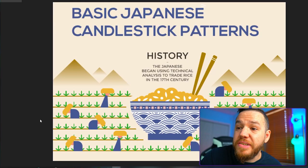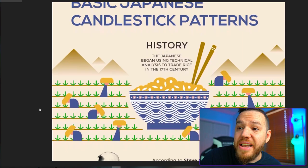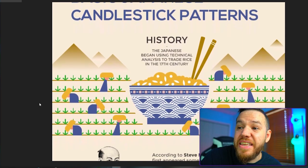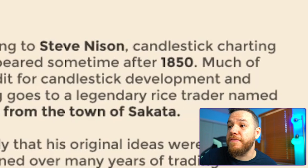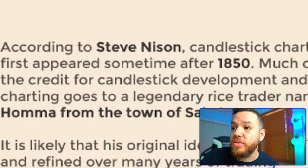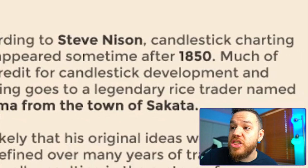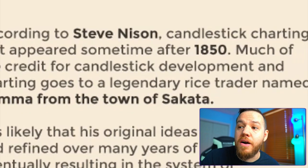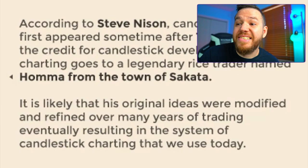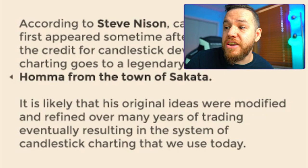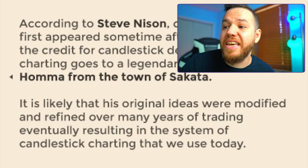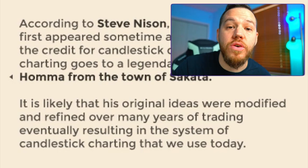Let's get a little backstory on candlestick charts. The Japanese began using technical analysis to trade rice in the 17th century. Candlestick charting first appeared sometime after 1850. Much of the credit for candlestick development and charting goes to the legendary rice trader named Homa from the town of Sakata. It is likely that his original ideas were modified and refined over many years of trading, eventually resulting in the system of candlestick charting that we use today.